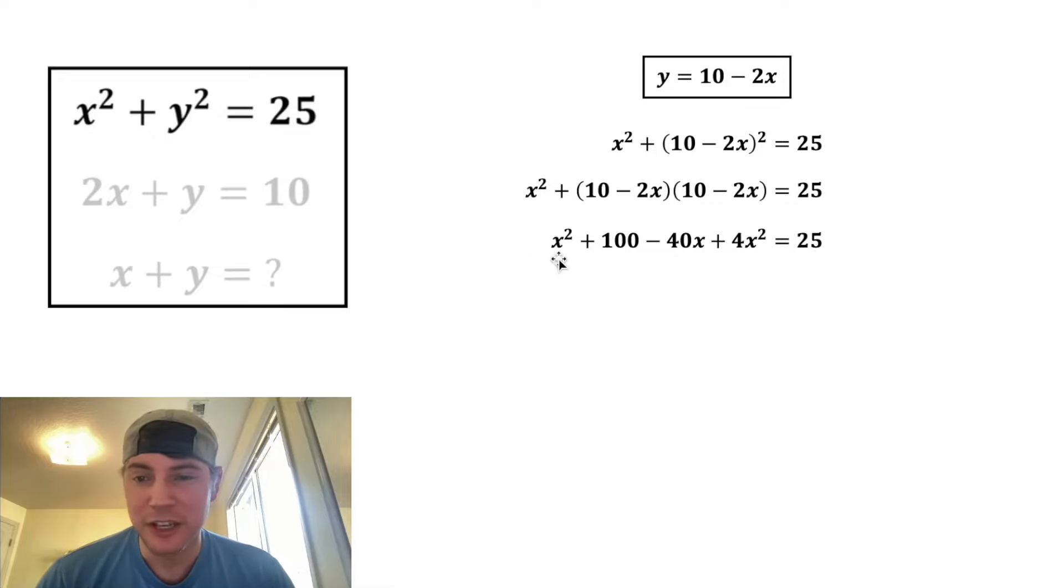So now let's combine like terms. x squared plus 4x squared is 5x squared. We can bring down the negative 40x. And if we subtract 25 from both sides, 100 minus 25 is 75, and 25 minus 25 is zero.